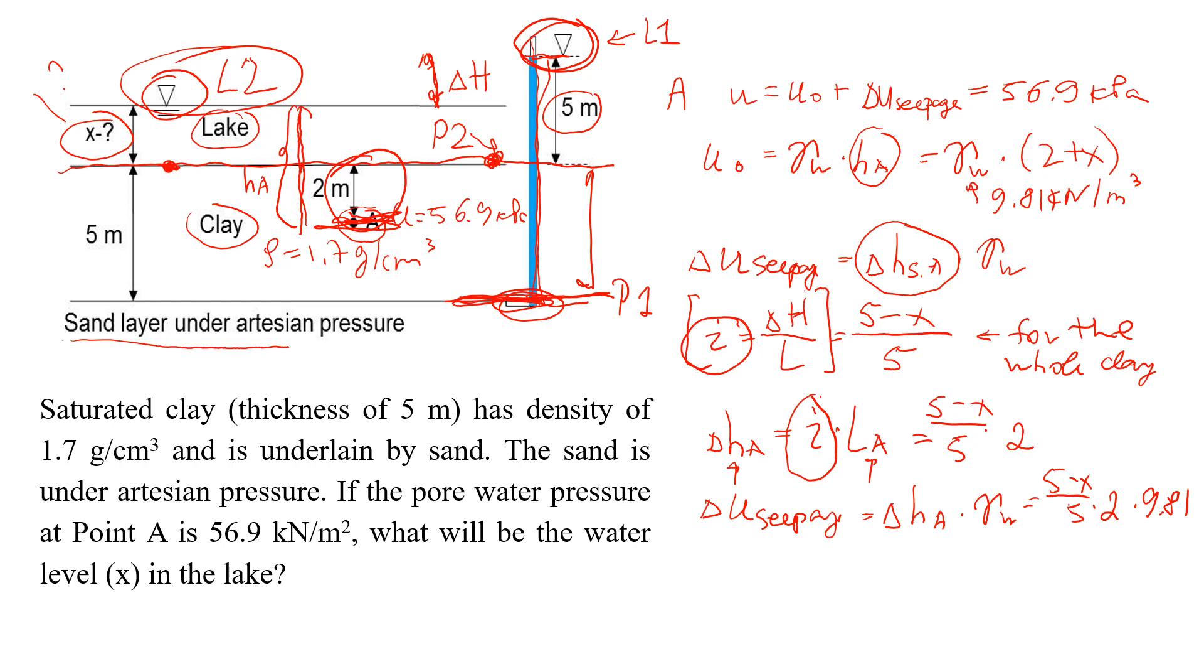So now we have all the components of pore pressure and I can write it as pore pressure, which we know is 56.9, equals the hydrostatic pressure, 2 plus x times 9.81, plus this additional pore pressure that comes from the seepage, 5 minus x divided by 5 times 2 times 9.81. So we have only one unknown, which is x. And when we do the calculations, we get that x would be approximately 3 meters. So that's going to be the answer.